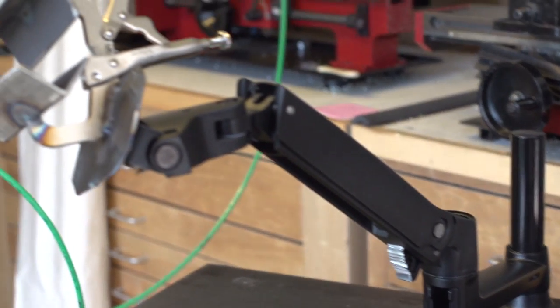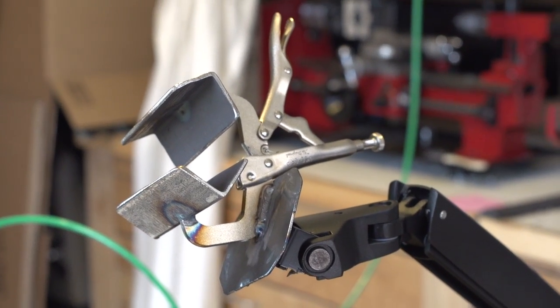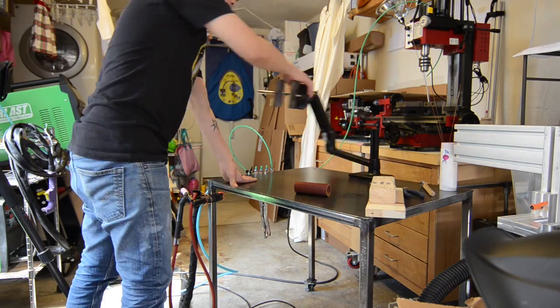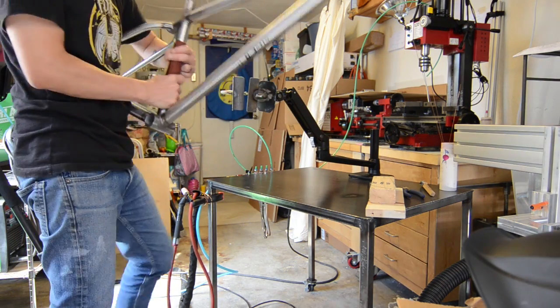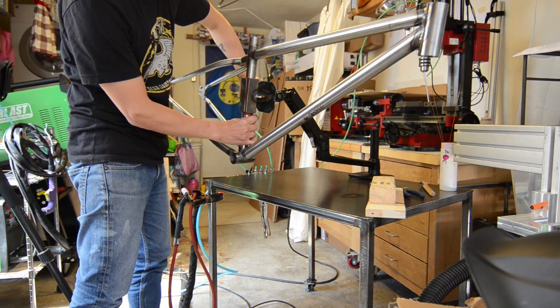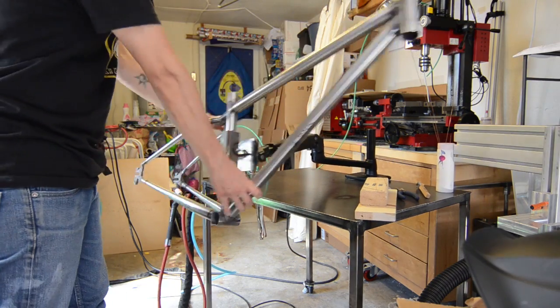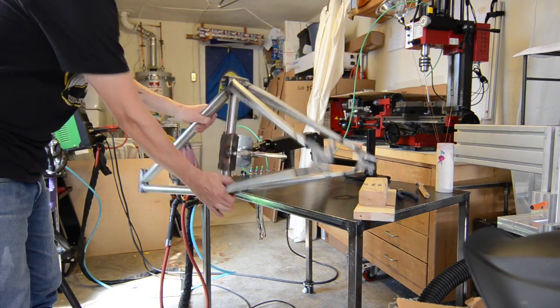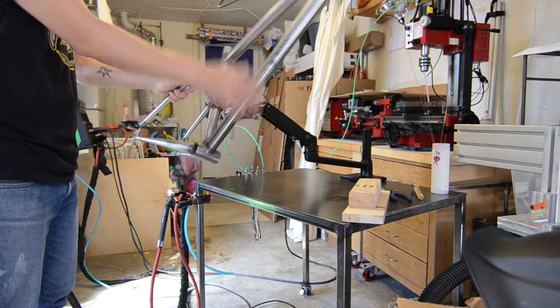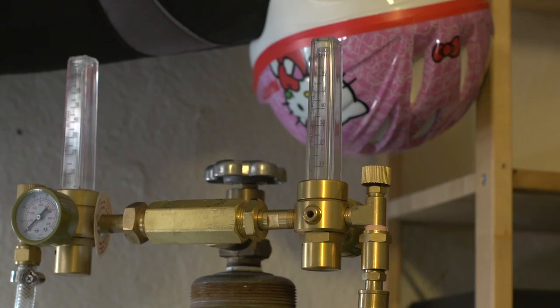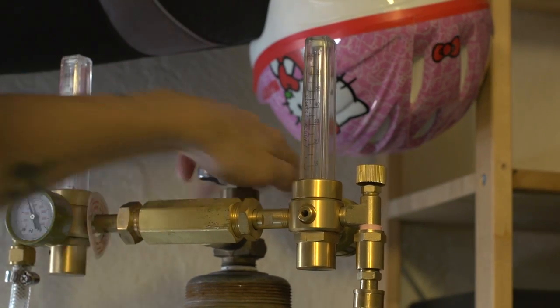This is a frame holder thing that I made just for welding. And normally people use one of those park tool bike stand things. But I don't own one so I used this old monitor arm that I had. It was just sitting around. And it works really well. Amazingly well. Now that I have my environment set up let's do some welding.